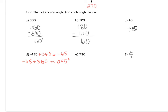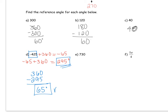295 is on the same terminal side as negative 425, so we're going to find the reference angle using 295. That's in quadrant four, so we do 360 minus 295. When you put that into the calculator, you should get 65. That is the reference angle.